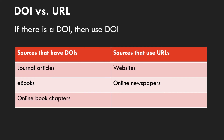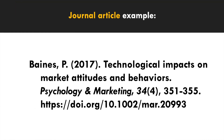Here's an example of a journal article reference fully filled out. You can see the author's name — Baines — the year published — 2017 — the title 'Technological Impacts on Market Attitudes and Behaviors,' published in the journal Psychology and Marketing, issue 34, volume 4, followed by the page number and DOI.